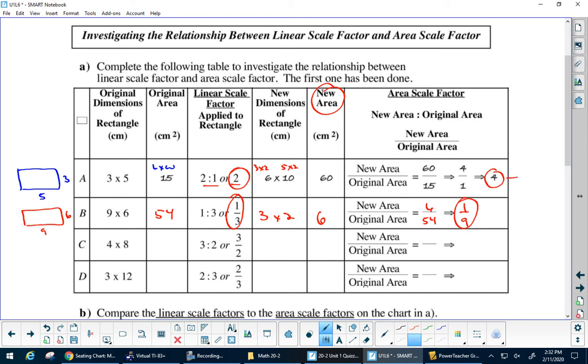So this is the same thing as 2 squared. This is the same thing as 1 third squared. Because 1 third times 1 third, 1 times 1 is 1, 3 times 3 is 9. So if this linear scale factor is 3 over 2, what do you think the area scale factor would be, without doing all the work? 9 over 4. Very good. How do you get 9 over 4? That's 3 over 2 squared. 3 times 3 is 9, 2 times 2 is 4.